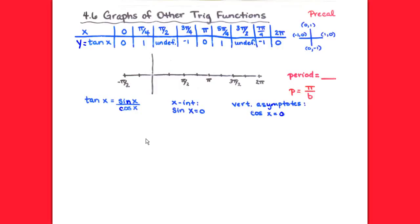Up until this point we've graphed sine and cosine. Now we want to graph tangent, cotangent, secant, and cosecant. With sine and cosine you could graph anything on the face of the earth if you just plotted enough points.